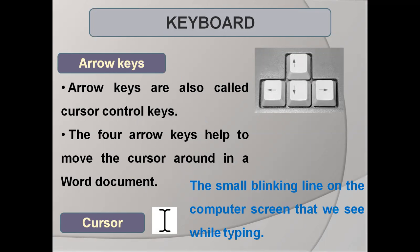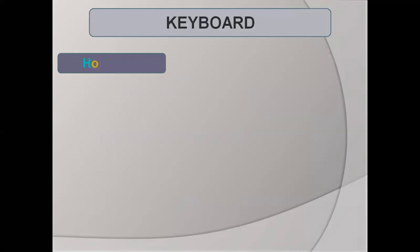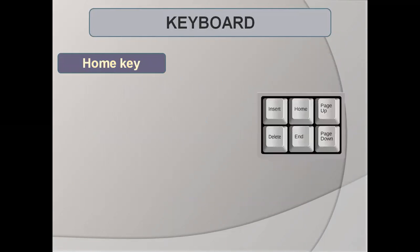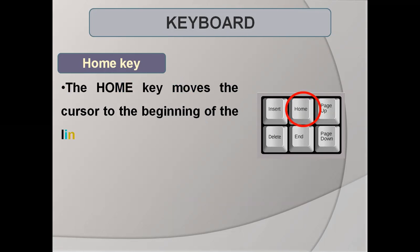As we're talking about typing in a word document, the home key moves the cursor to the beginning of the line. You can see the home key circled in red right over here. This brings the cursor to the beginning of the line.